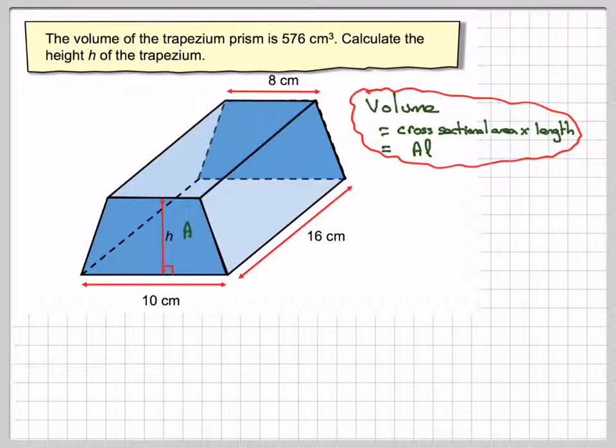So this is A, this area here, and this length here is L. So it's identifying the particular characteristics of the shape in order to put into the formula that we know already.